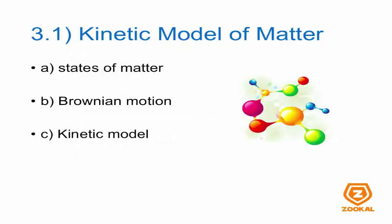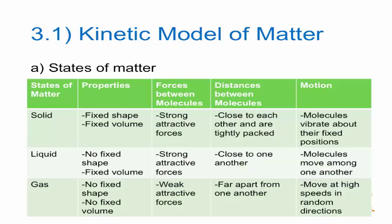For the Kinetic Model of Matter, we'll be looking at three things: States of Matter, Brownian Motion, and the Kinetic Model. From primary school, we all know there are three states of matter — solid, liquid, and gas. But do we know their properties? We'll be looking at the properties of solid, liquid, and gas respectively.